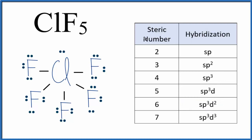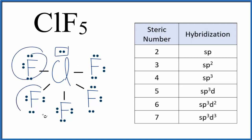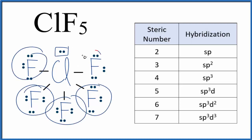First, we could look at the steric number — that's the number of electron domains attached to the central atom. We have one lone pair, and then we have five fluorine atoms, giving us a total of six electron domains. Six gives us sp3d2, just like we said before.